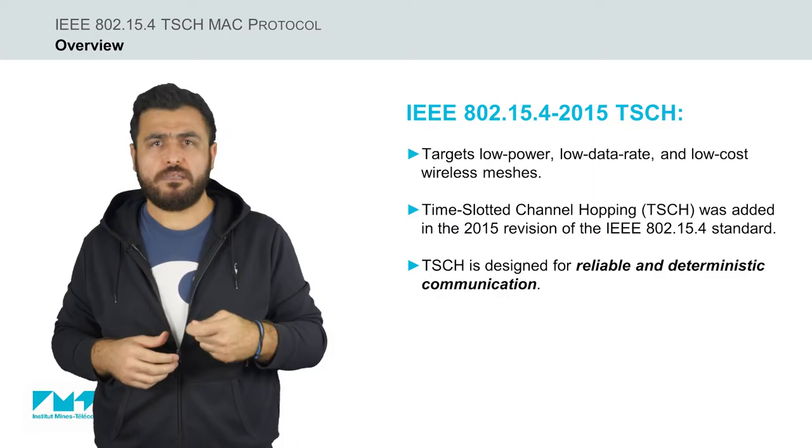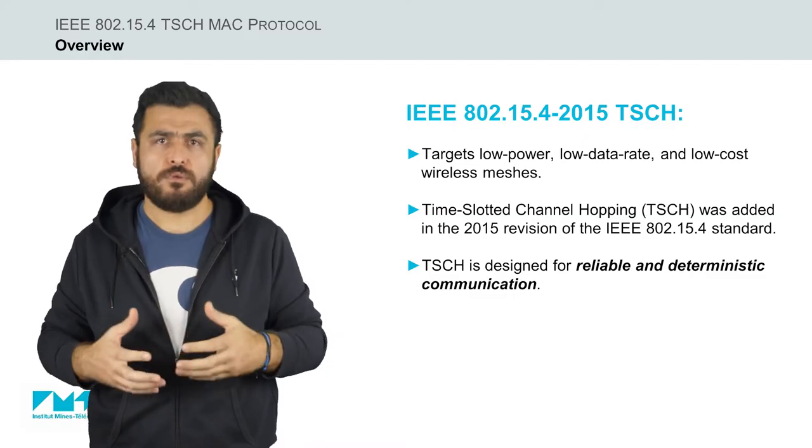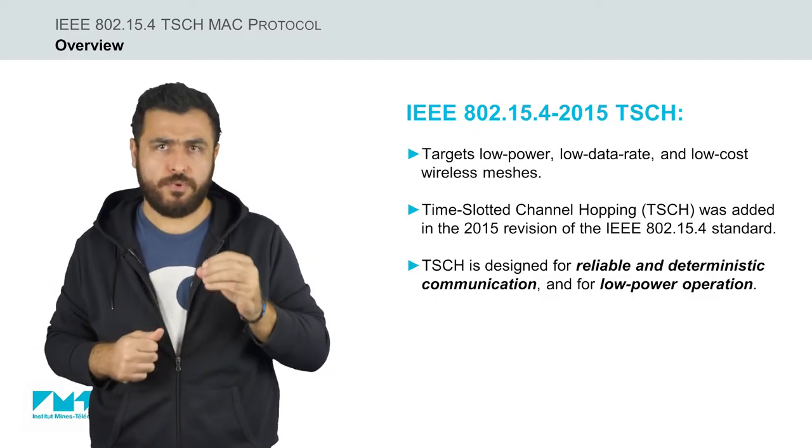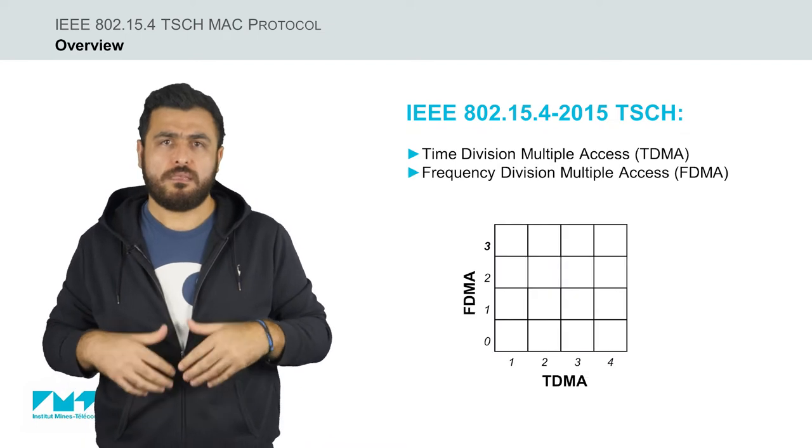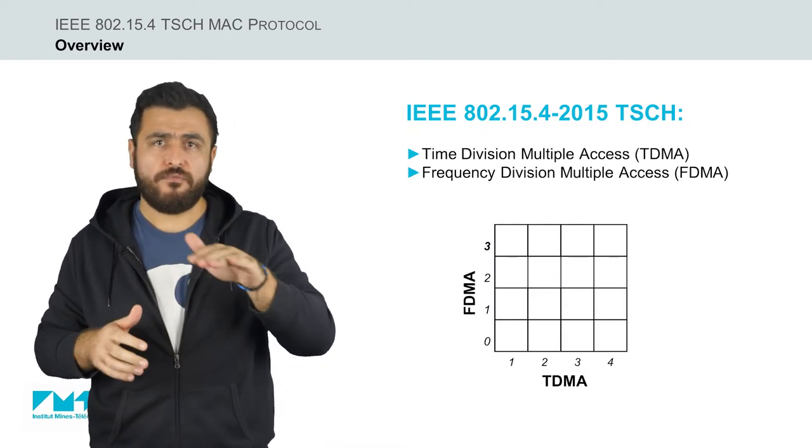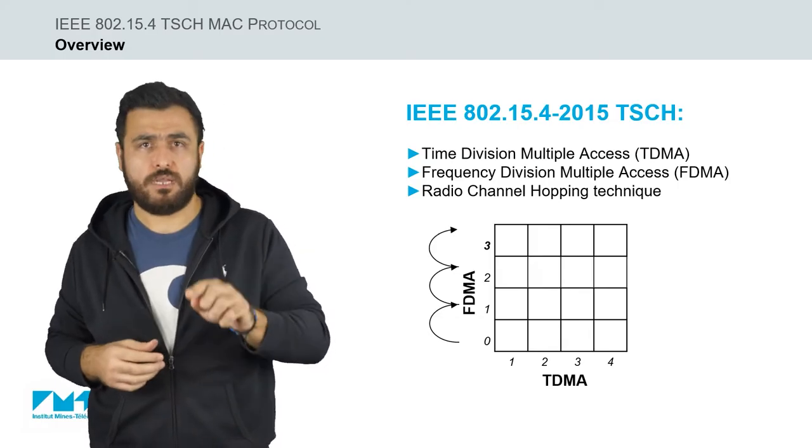TSCH is designed for reliable and deterministic access to the communication medium while enabling long radio sleep intervals to guarantee low-power operation. It is essentially a combination of time division and frequency division multiple access in conjunction with a radio channel hopping technique.